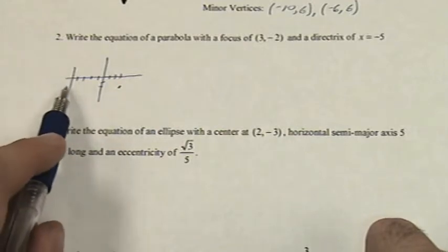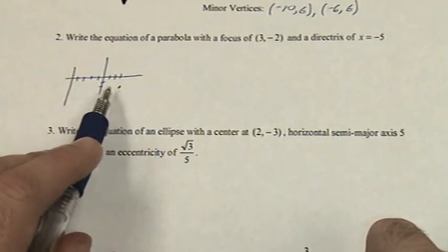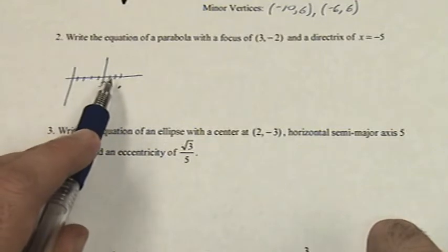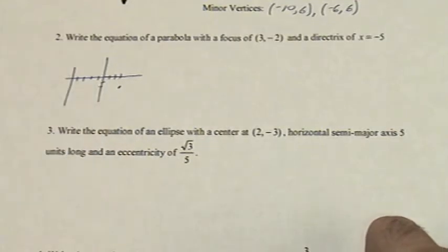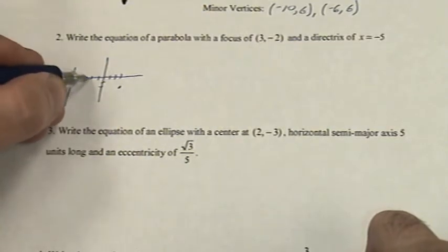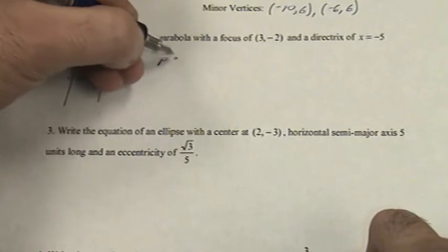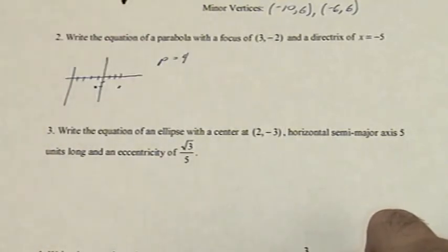The distance from our directrix to our focus, 1, 2, 3, 4, 5, 6, 7, 8 units. Half of that is going to be p, 1, 2, 3, 4. P will be some kind of 4. And we already said that it would be a positive 4.